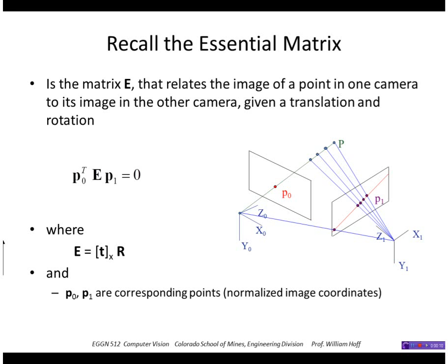The essential matrix, if we remember, is the matrix E that relates the image of a point in one camera to its image in the other camera, given a translation and rotation. E is a three by three matrix. Here, p0 and p1 are corresponding points in normalized image coordinates, and E is constructed from the translation and rotation between the cameras.